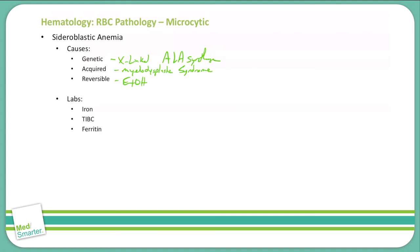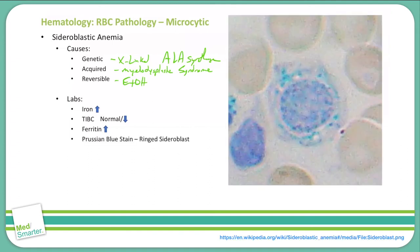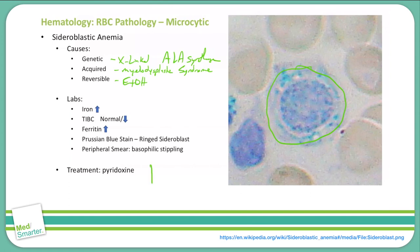In sideroblastic anemia, labs show increased iron, normal to decreased total iron binding capacity (TIBC), and increased ferritin. Using a Prussian blue stain, we see a ring sideroblast — a ring around the cell — and on peripheral smear, basophilic stippling. The treatment for sideroblastic anemia is pyridoxine, also known as vitamin B6, which is a cofactor in ALA synthase — connecting back to the X-linked ALA synthase gene defect.